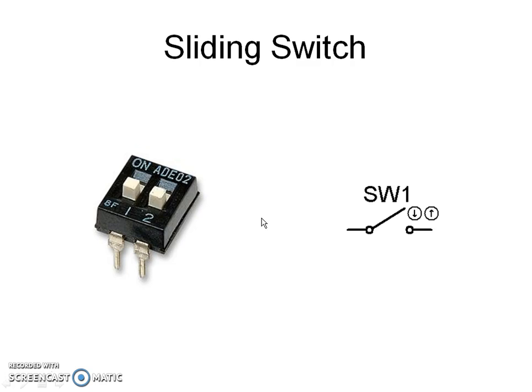Both sliding switch and push button are of the type single pole, single throw. They have a contact resistance of less than 0.1 ohm and a contact current of 100 mA at 50 volts.